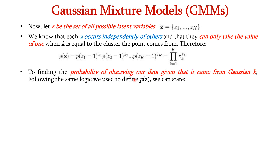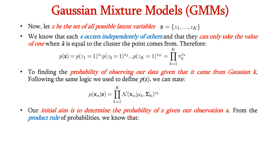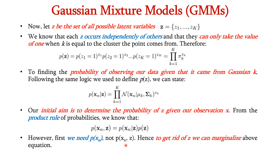To find the probability of observing our data given it came from Gaussian k, following the same logic used for P(z), we write P(xn | z) as the product from k=1 to K of the normal distribution of xn given mu_k, sigma_k, raised to the power z_k. Our aim is to determine P(z | x), not P(xn | z). From the product rule of probabilities, P(xn, z) = P(xn | z) times P(z). But we need P(xn), not P(xn, z), so we must eliminate z.